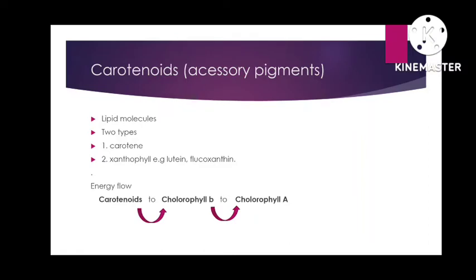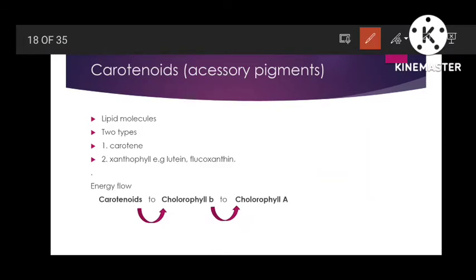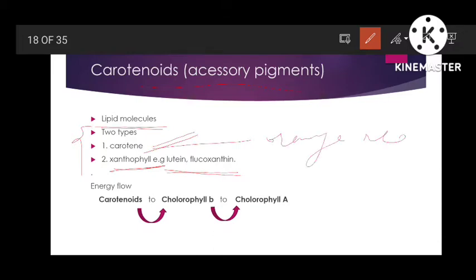Hello everyone, welcome to my channel. Today our topic is carotenoids. In the last video we talked about chlorophyll and its types, and today we will be studying carotenoids — accessory pigments. Carotenoids are lipid molecules and are of two types: carotene and xanthophyll, for example lutein and glucosanthene.